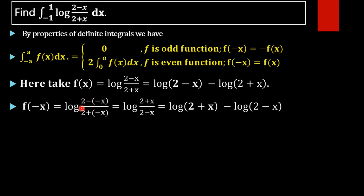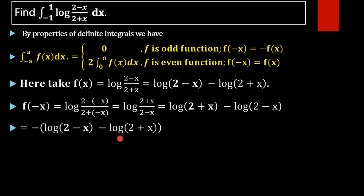That gives log of (2 plus x) divided by (2 minus x). Applying the properties of logarithm, we rewrite this as log(2 plus x) minus log(2 minus x), which equals minus of [log(2 minus x) minus log(2 plus x)]. Taking the negative outside, log(2 minus x) becomes positive and log(2 plus x) becomes negative.